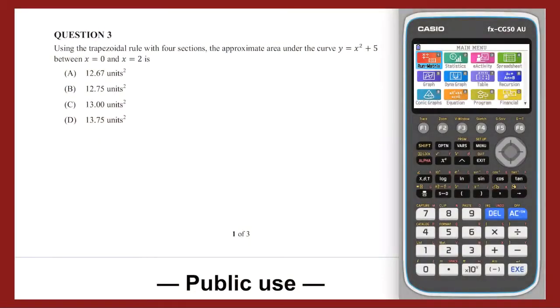Question 3. The trapezoidal rule using a width of 0.5 over an interval from 0 to 2 looks like this. The function values required are 5, 5 plus 0.5 squared which is 5.25, 6, 5 plus 1.5 squared which is 7.25, and 5 plus 2 squared which is 9.